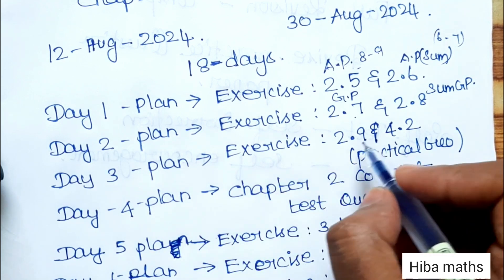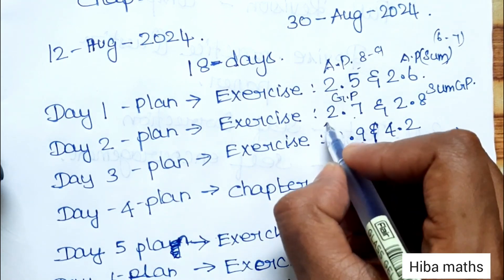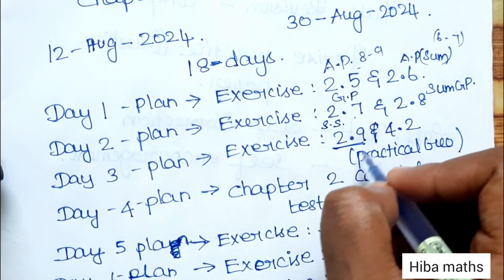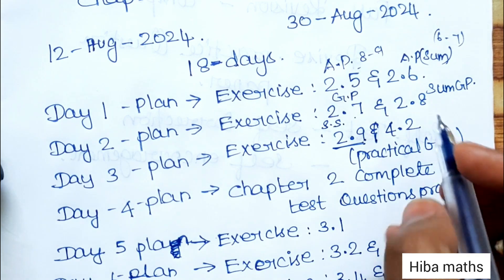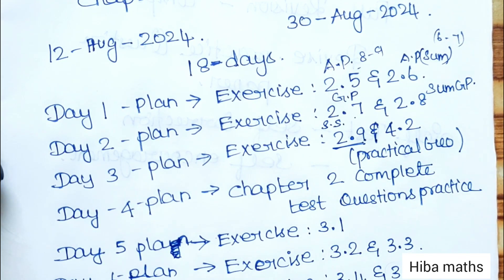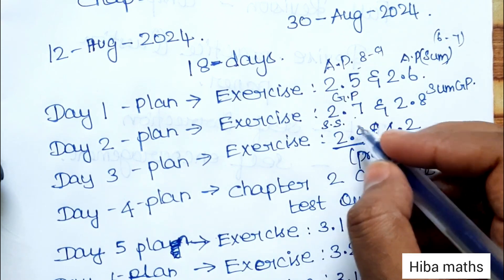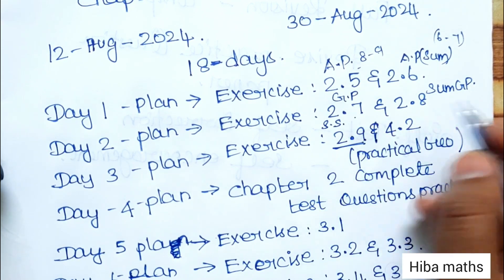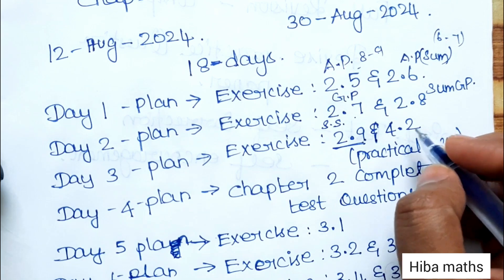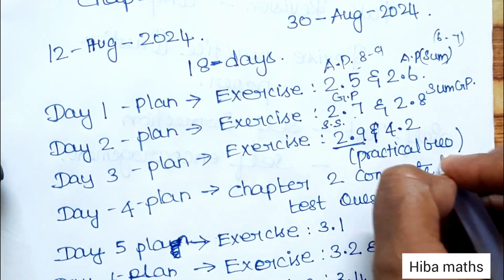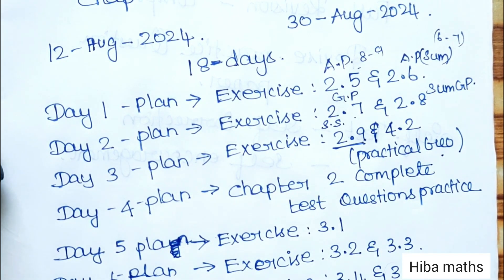Day 3 is exercise 2.9, which is special series — including sum of natural numbers, sum of square numbers, and sum of odd numbers. Once those are complete, Day 4 we will do practical geometry sums.